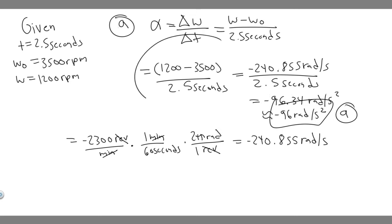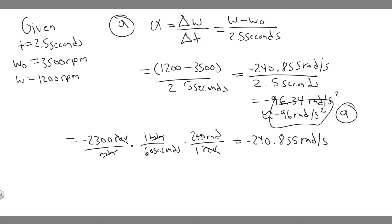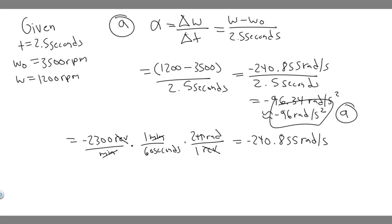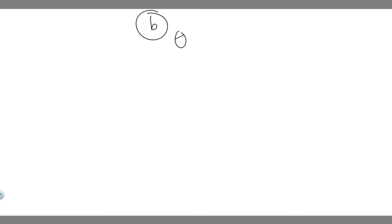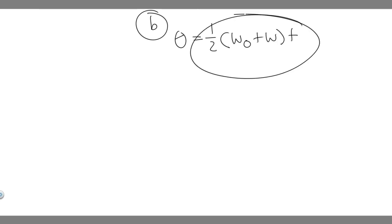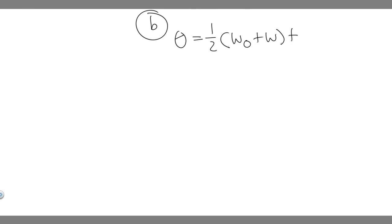Let's go ahead and do part B. I'm going to erase the screen, so write down anything you need. Part B asks for the total number of revolutions. To solve this, there's a formula you need: theta equals one half times the quantity of initial angular velocity plus final angular velocity, times time. You can use this formula, but we need to make sure the units work out correctly.